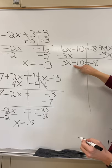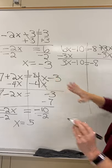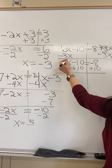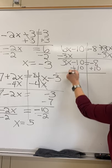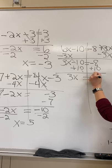So what I want to do is get rid of this minus 10 so that my x term will be all by itself. So I'm going to add 10 to both sides. Bring down my 3x. The 10s go away. Negative 8 plus 10 is 2.